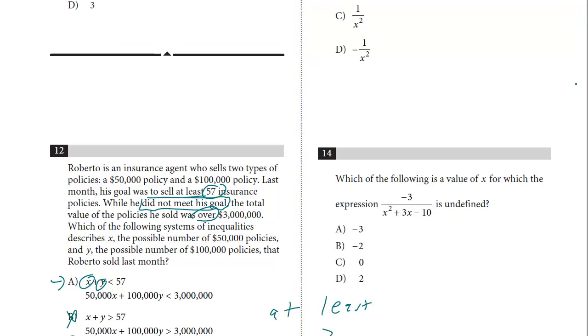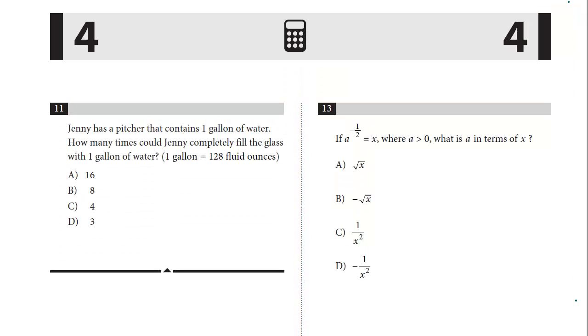Let's take a look at question number 13. If A to the negative one-half equals X, where A is greater than zero, what is A in terms of X? We've seen this phrase a lot. A in terms of means we need to solve for A.